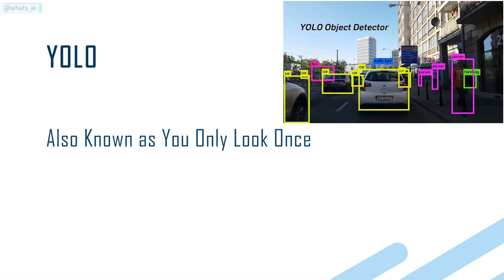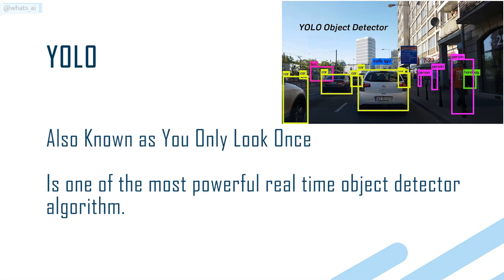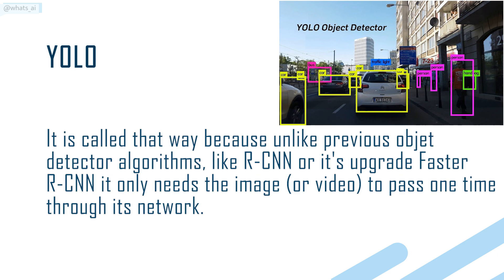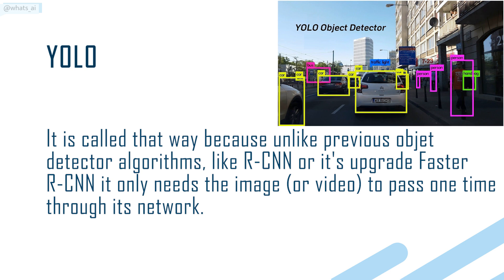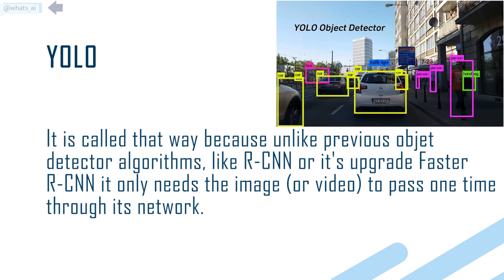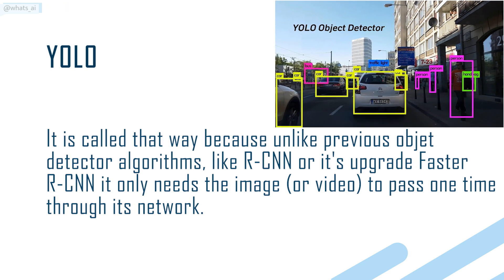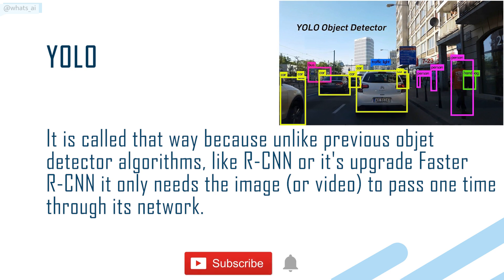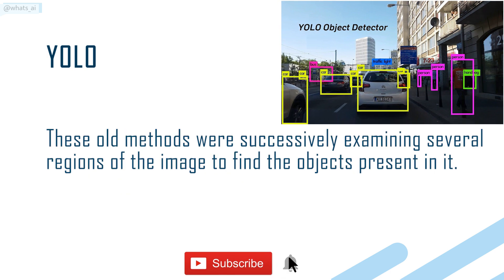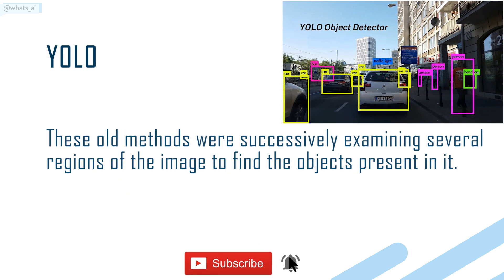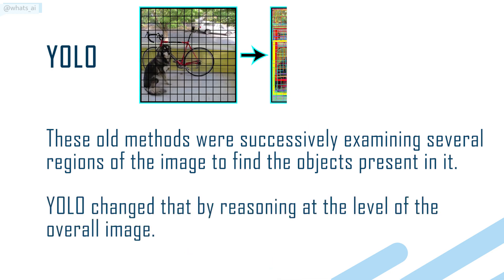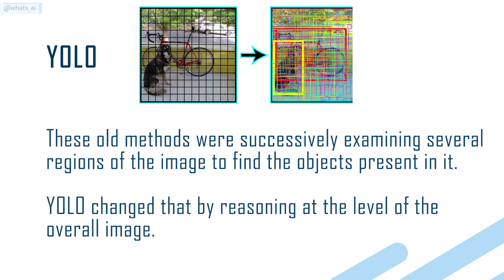YOLO, also known as You Only Look Once, is one of the most powerful real-time object detector algorithms. It is called that way because, unlike previous object detector algorithms like RCNN or its upgrade Faster RCNN, it only needs the image or video to pass one time through its network. These old methods were successively examining several regions of the image to find the objects present in it. YOLO changed that by reasoning at the level of the overall image.